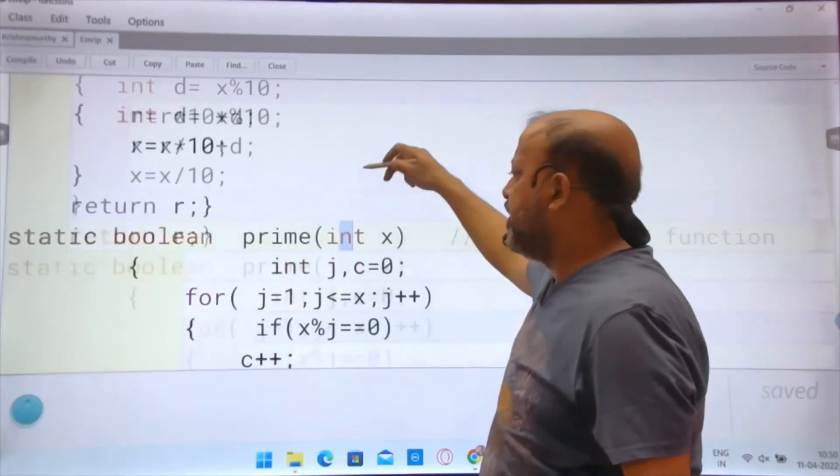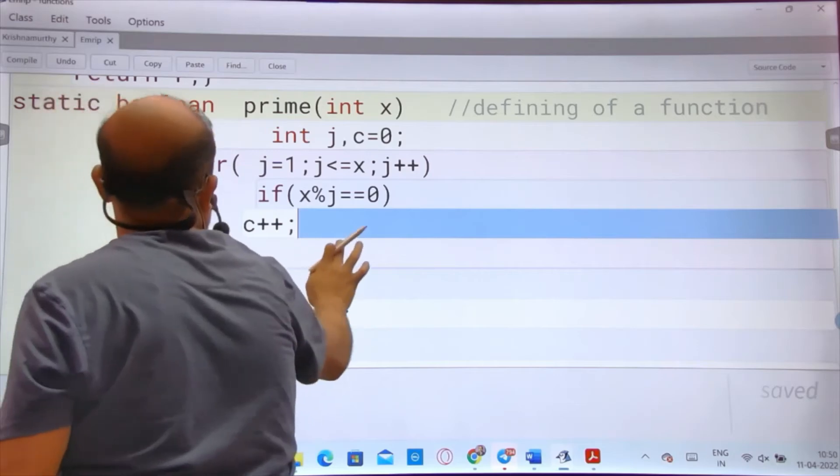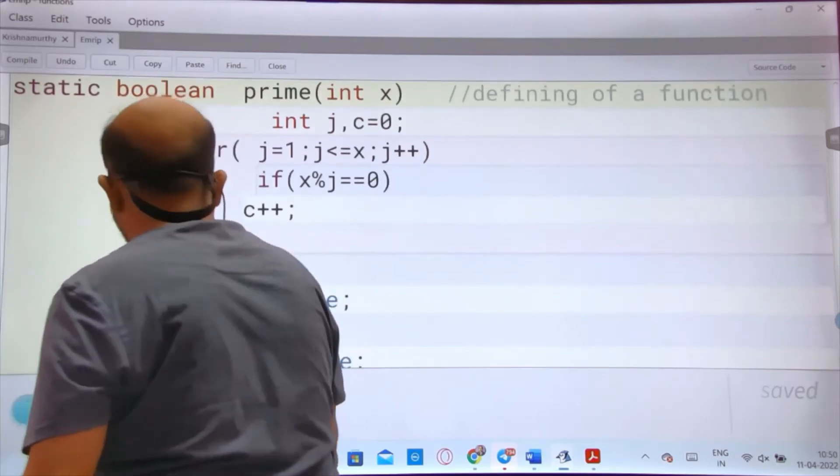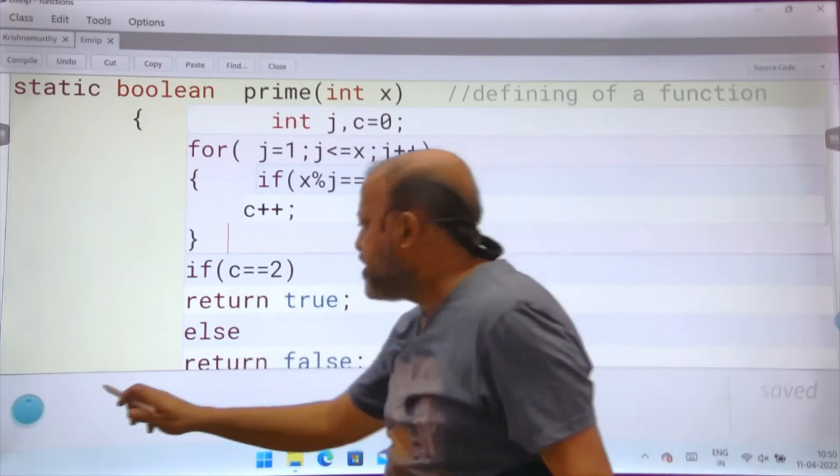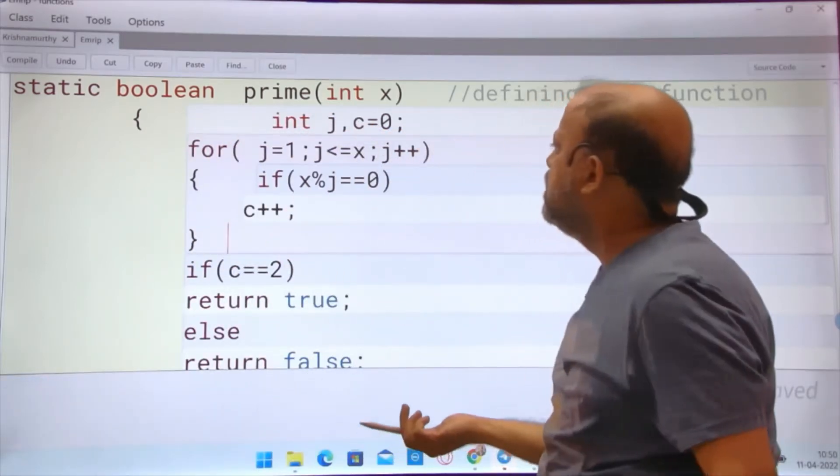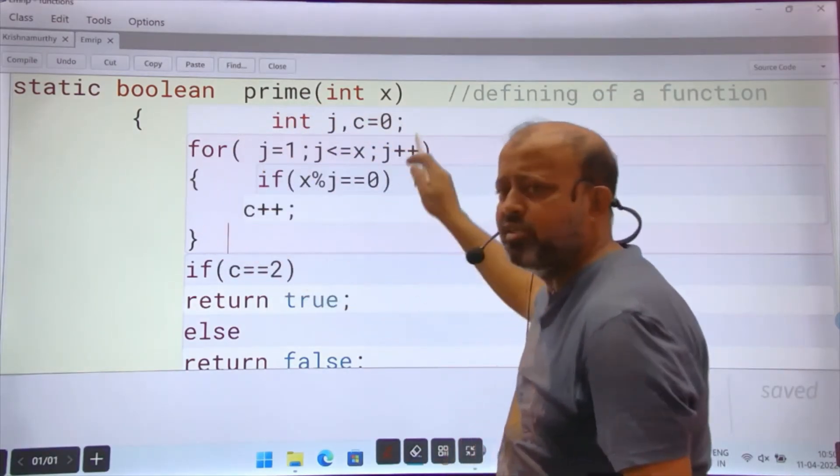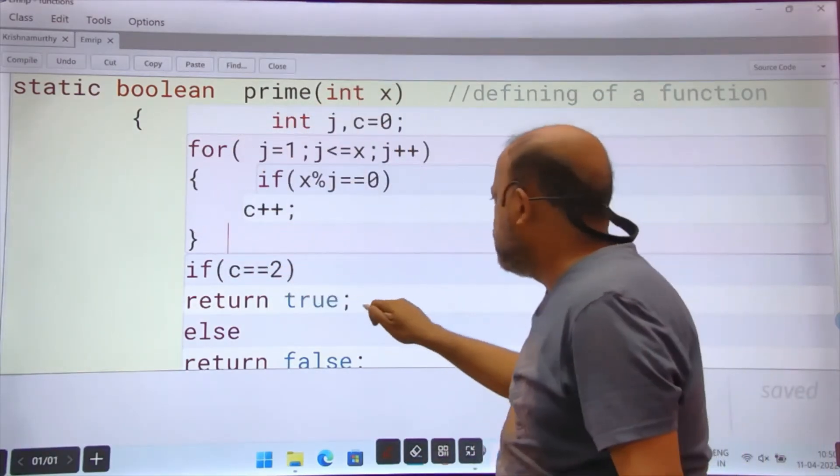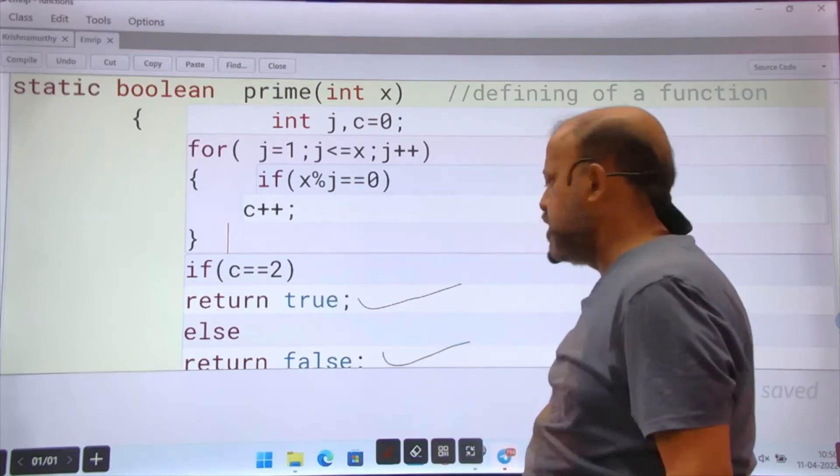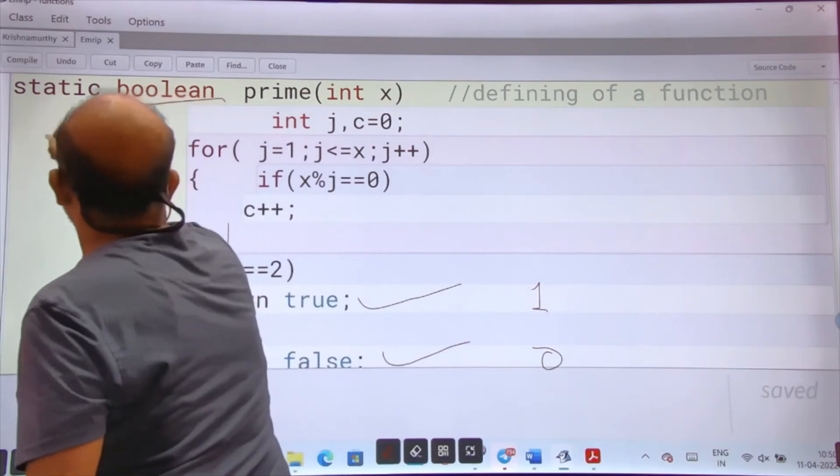In the same way I have declared boolean. See in boolean prime, I could have returned a value, I could have returned one or zero, then it would be int. Since Java has true false, what I have done, I have used true and false. Prime number checking - you know how to check x is prime. If c is 2, return true, otherwise return false. You could have done one or zero, very standard way, then it would be int.